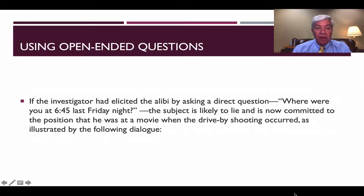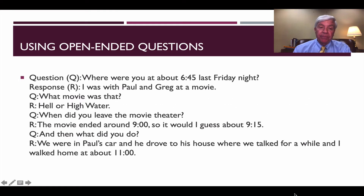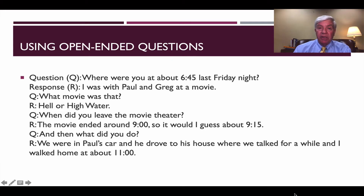On the other hand, if the investigator had elicited the alibi by asking a very specific question — 'Where were you at 6:45 last Friday night?' — we are almost forcing the subject to lie and committing themselves to being at the movie when the drive-by shooting occurred, as illustrated by the following dialogue. Investigator: 'Where were you at about 6:45 last Friday night?' Subject: 'I was with Paul and Greg. We were at a movie.' Investigator: 'What movie was that?' Subject: 'Hell or High Water.' Investigator: 'When did you leave the movie theater?' Subject: 'I don't know. I think it ended around 9, maybe 9:15 or so.' Investigator: 'And then what did you do?' Subject: 'Well, we were in Paul's car. We drove over to his house for a little while, hung out there, and then I left at about 11 o'clock.'